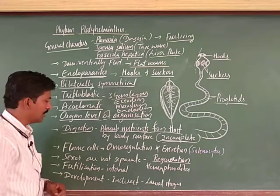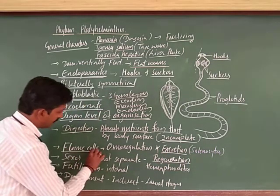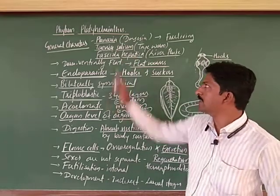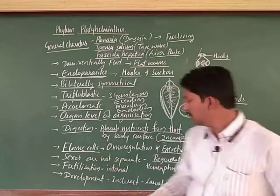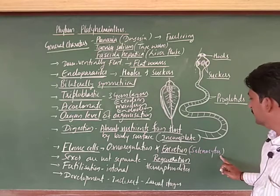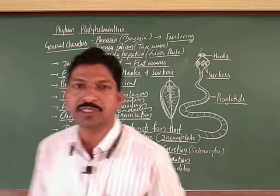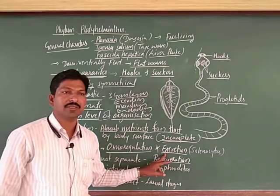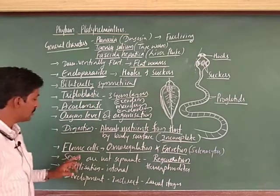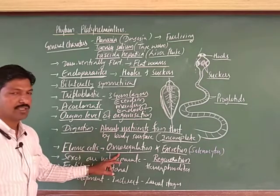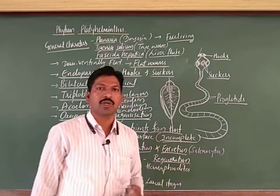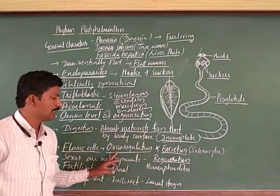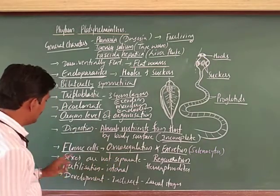There are specialized cells for excretion called flame cells. Flame cells are a unique identification character of Platyhelminthes, also called solenocytes. These flame cells are involved in two important functions: excretion — the removal of nitrogenous waste — and osmoregulation, which means maintaining the water balance of the body.